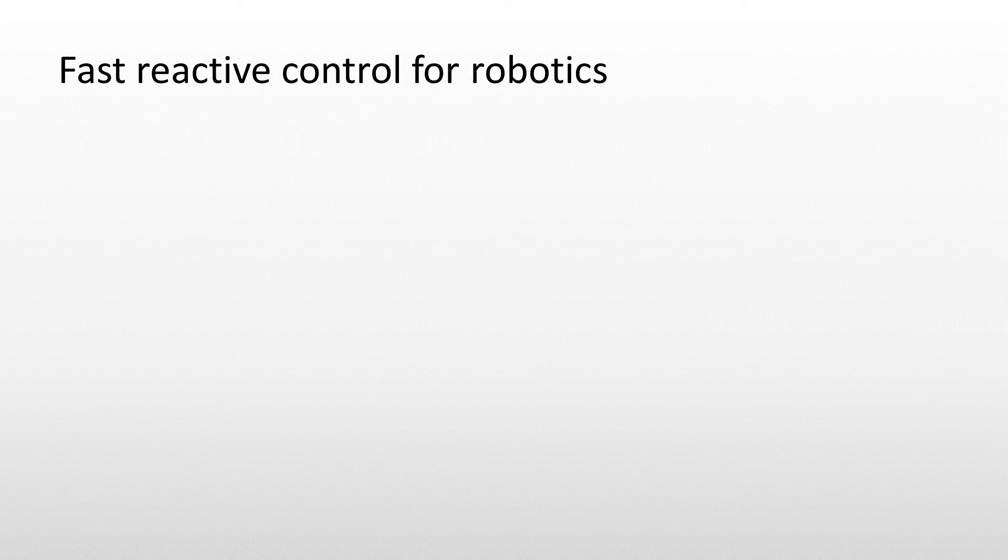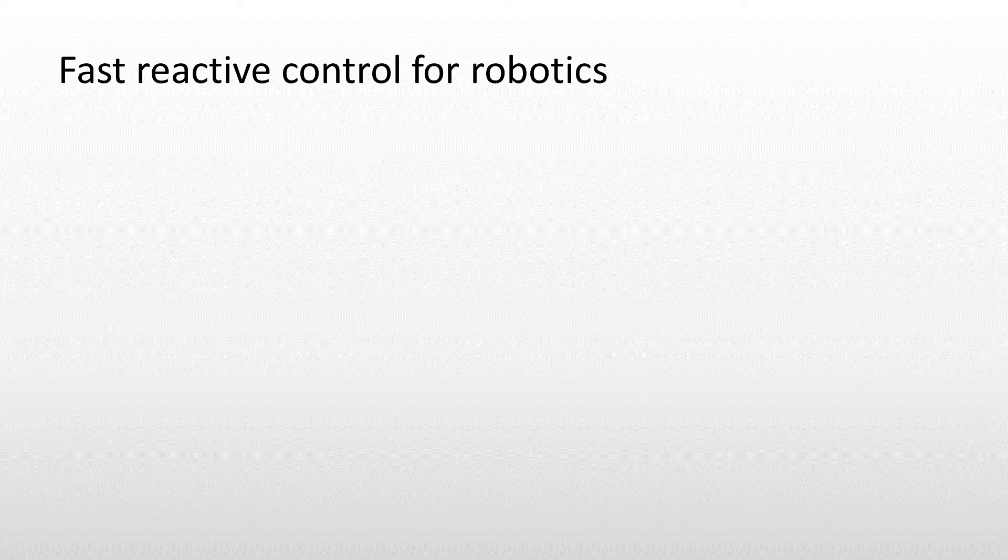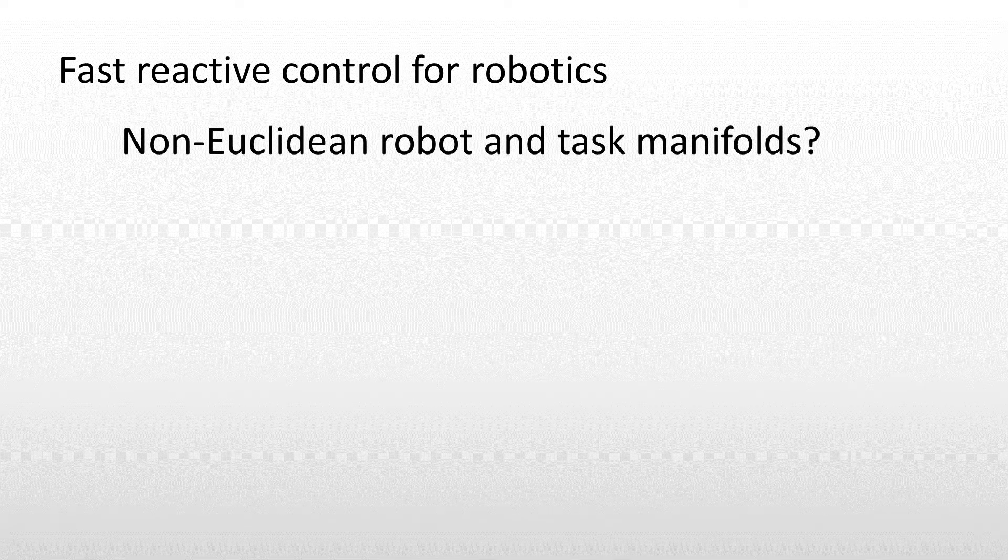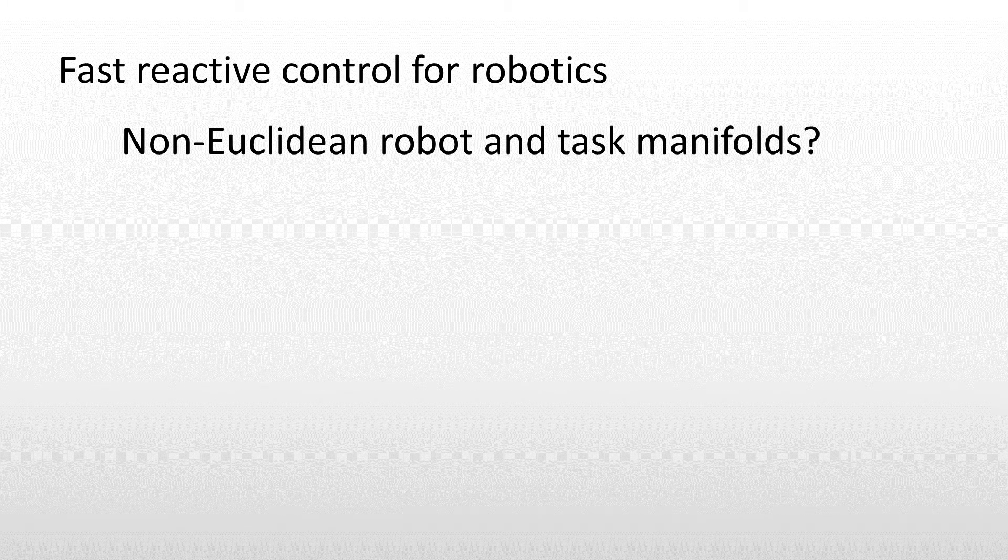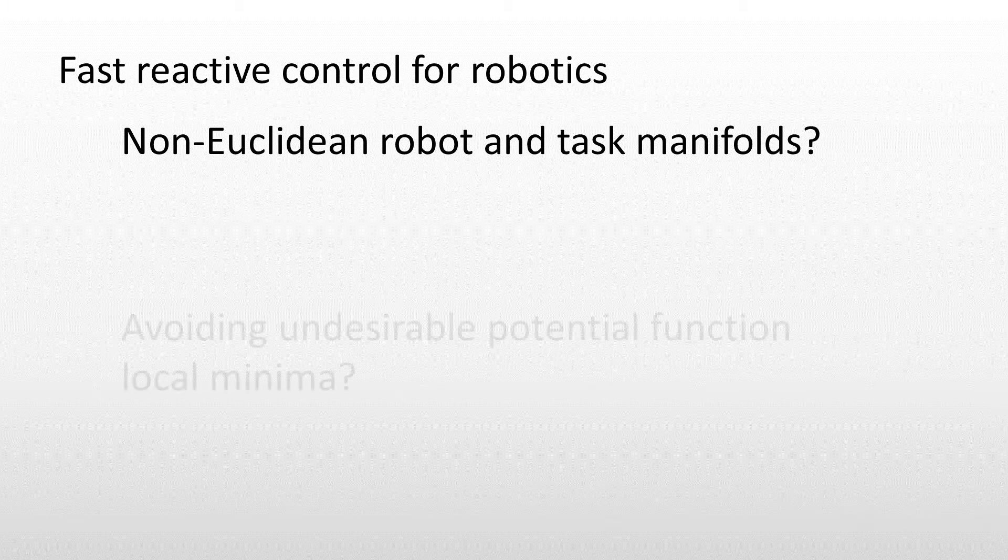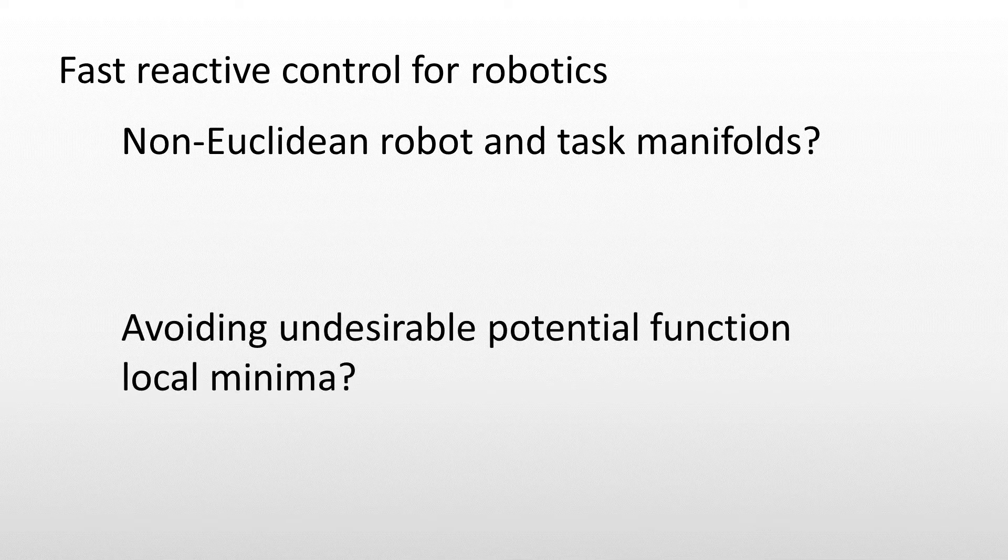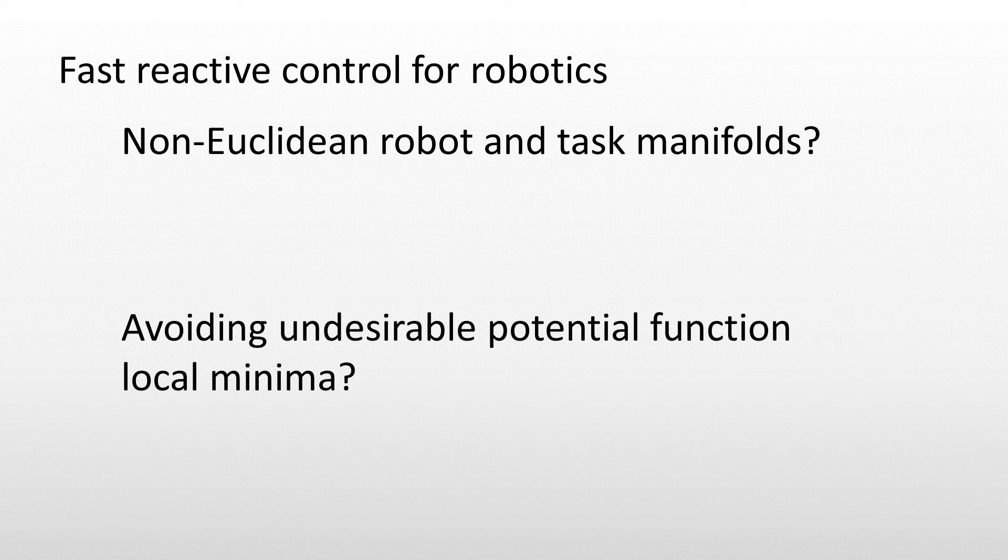Fast, reactive control of robots is often indispensable in dynamic and cluttered environments. However, such policies are often not designed for general non-Euclidean manifolds, despite such manifolds being common in describing robot configuration spaces and robot task spaces. Also, artificial potential field approaches have well-known issues with generating undesirable potential function local minima.